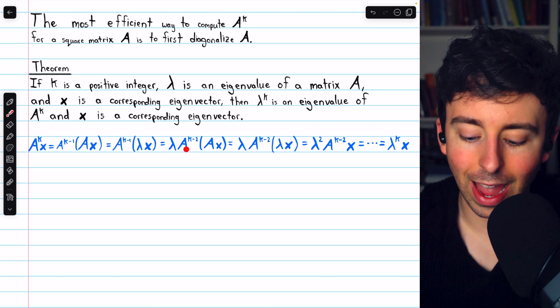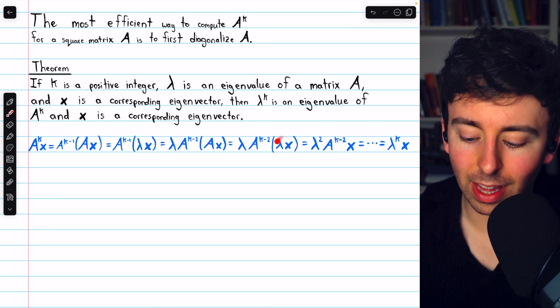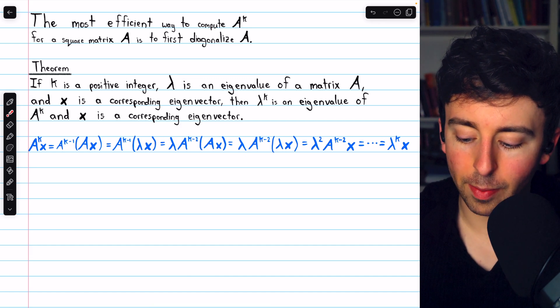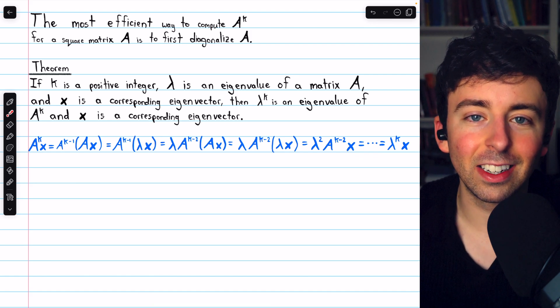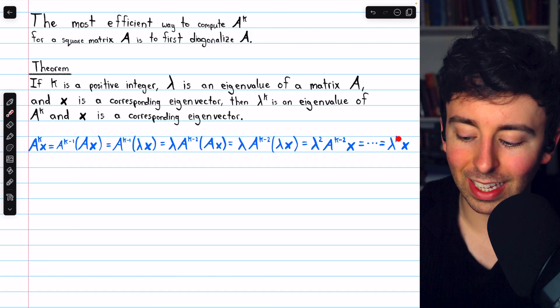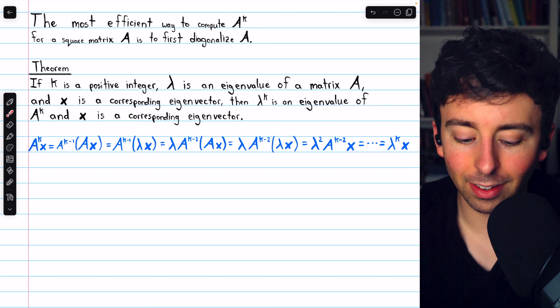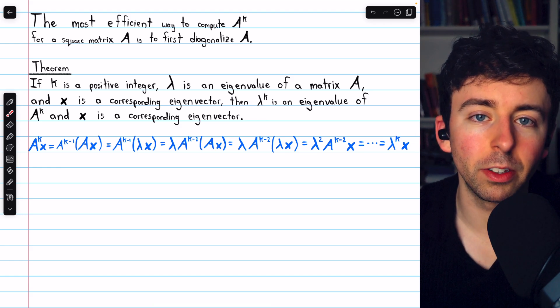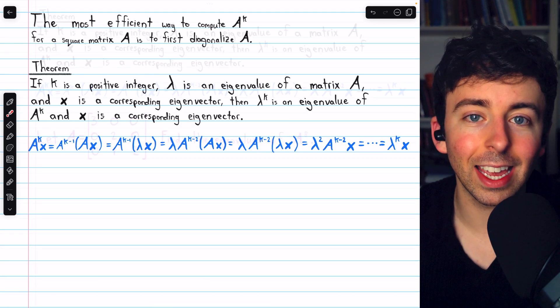So now we have A to the k minus 2, and we have another A times x. But again, x is an eigenvector of A, so A times x is lambda times x. So again, we could take that lambda out. Now we have lambda squared times A to the k minus 2 times x, and we could continue this process until we just have lambda to the k times x. And so in the end, we see that A to the k times x is just lambda to the k times x. And so lambda being an eigenvalue of A implies that lambda to the k is an eigenvalue of A to the k.